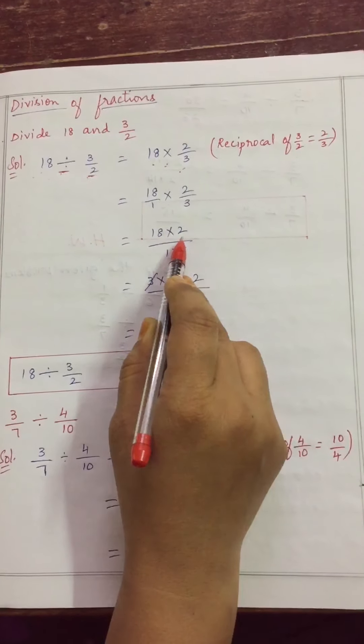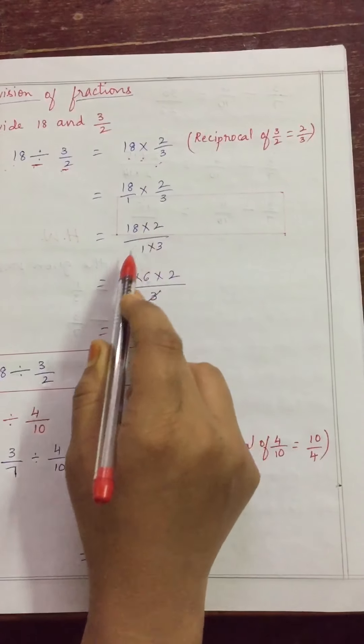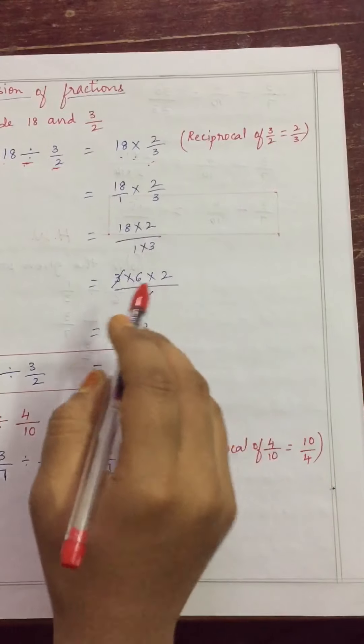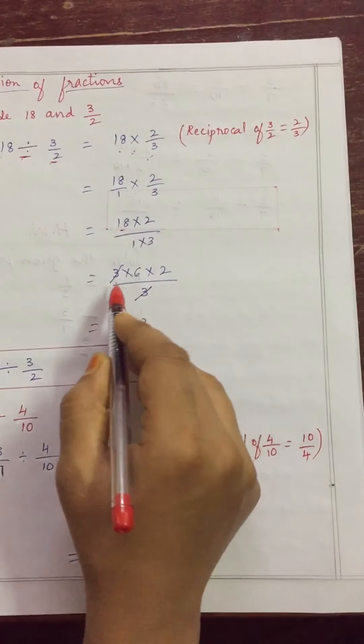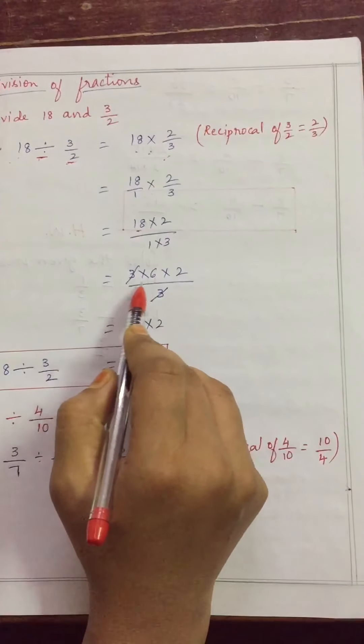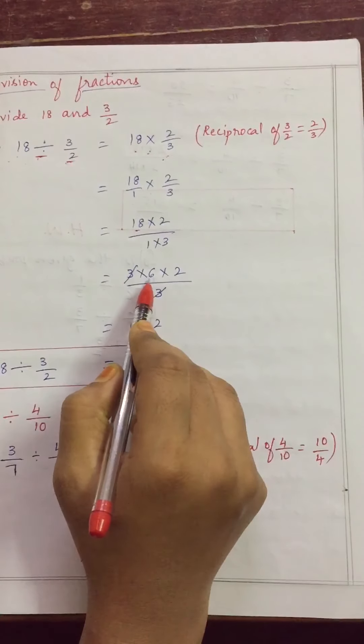Now, numerator into numerator we need to multiply. Denominator into denominator. So, 18 into 2 whole divided by 1 into 3. Now, 18 is a big number. I can split it. I can write into two numbers like 6 times 3 is 18, 3 times 6 is 18, 9 times 2 is 18.